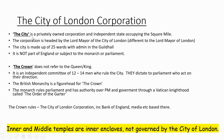The city is a privately owned corporation and independent state occupying the Square Mile. The corporation is headed by the Lord Mayor of the City of London, who is different to the Mayor of London. The city is made up of 25 wards or areas, with all the administration in the Guildhall. The city is not part of England and is not subject to the monarch, parliament, or any of their laws. The crown does not refer to the king or queen of England — it's actually an independent committee of 12 to 14 men who rule the city and dictate to parliament. The British monarchy — the royal family — is a figurehead for this committee called the Crown.